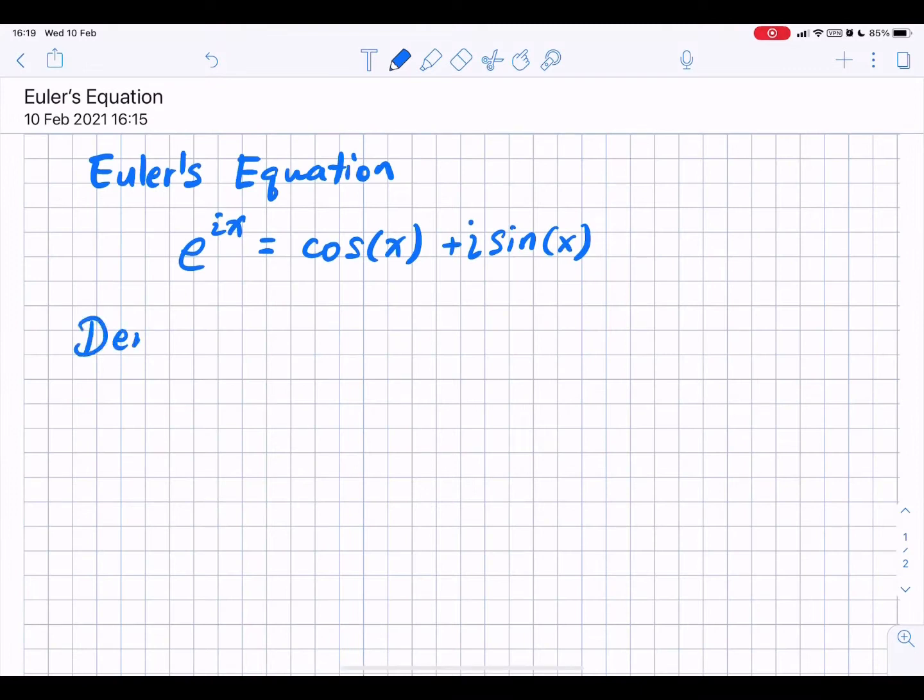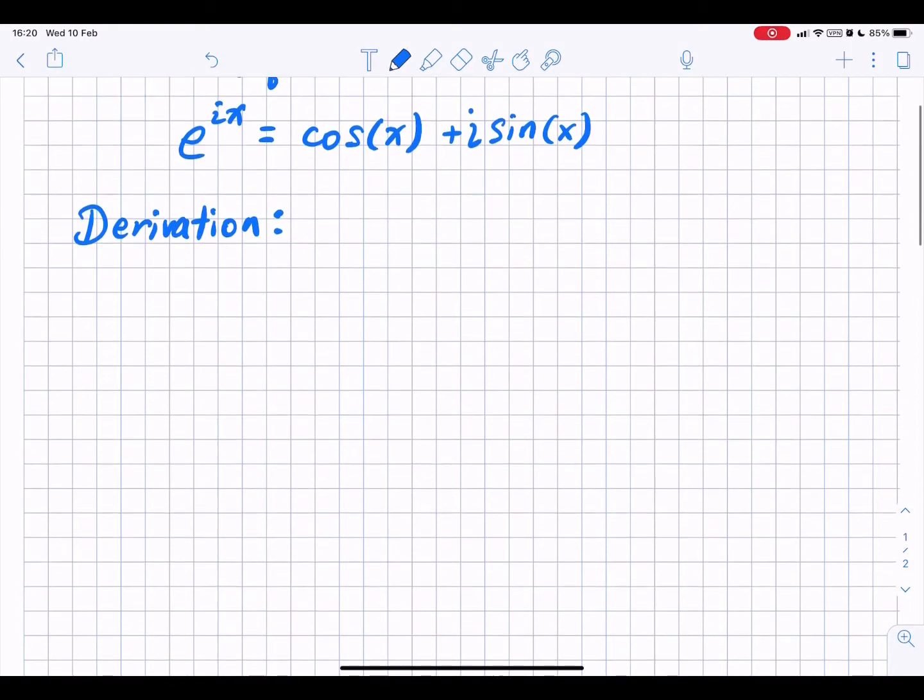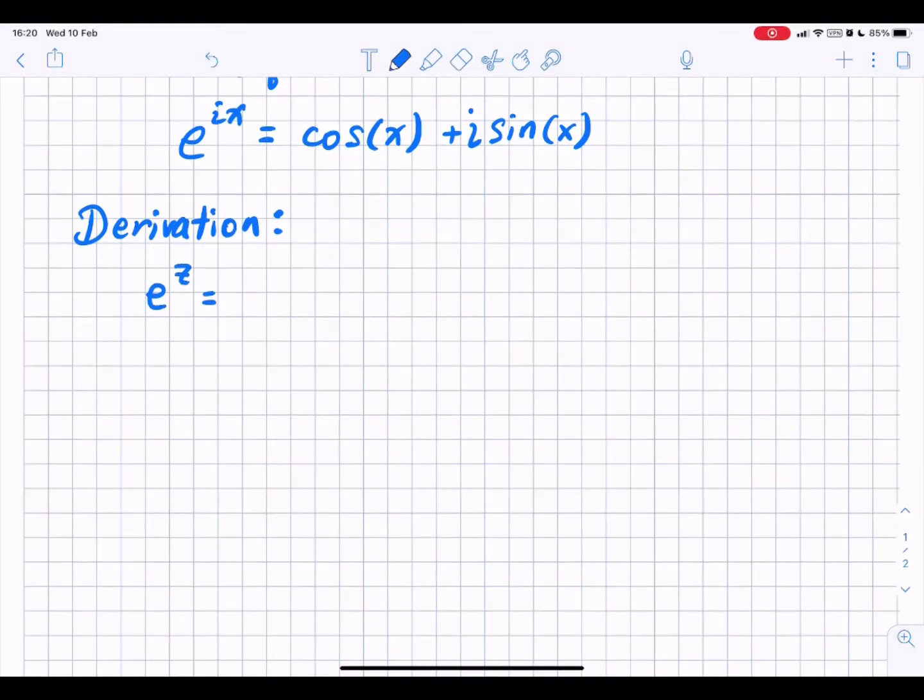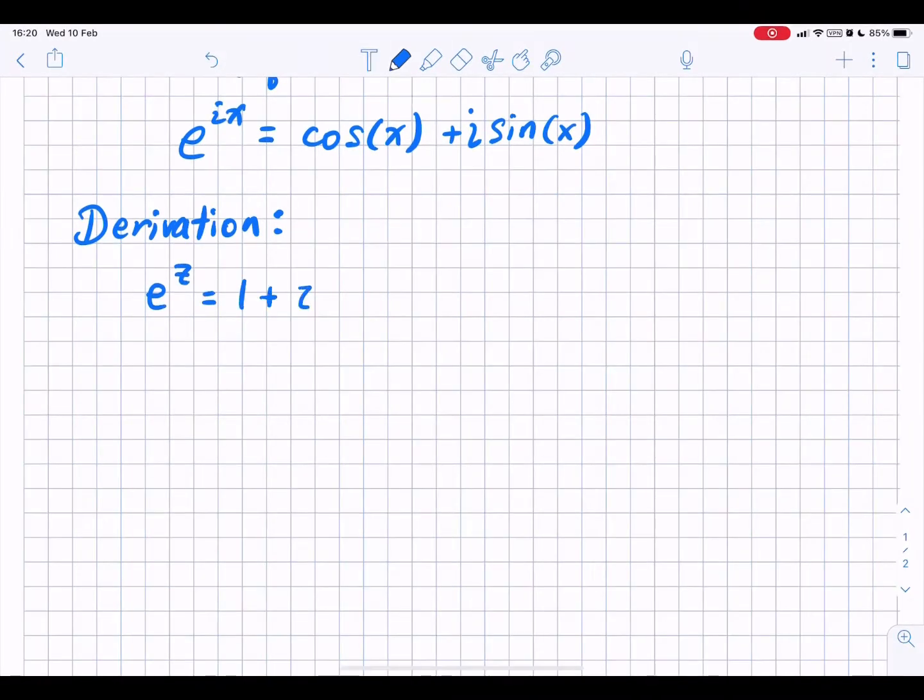To see where this equation comes from, we can start with the Taylor series expansion of e to the power of z, where e to the power of z is 1 plus z plus z squared over 2 factorial plus z to the third power over 3 factorial and so on.